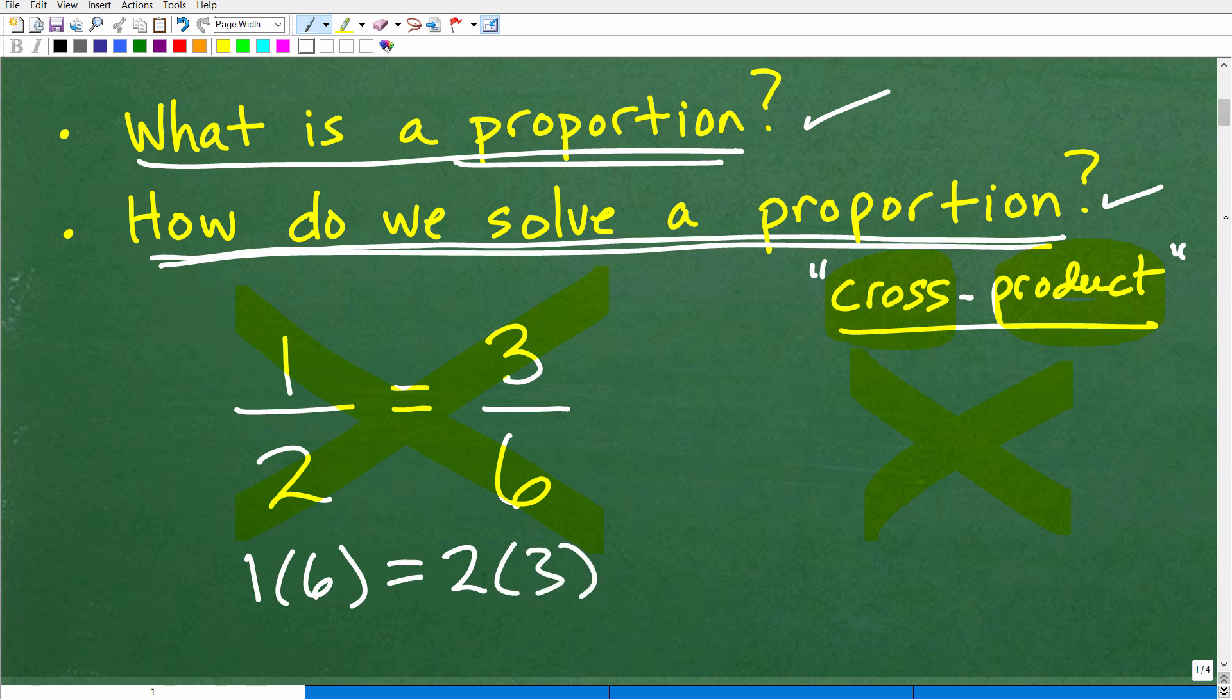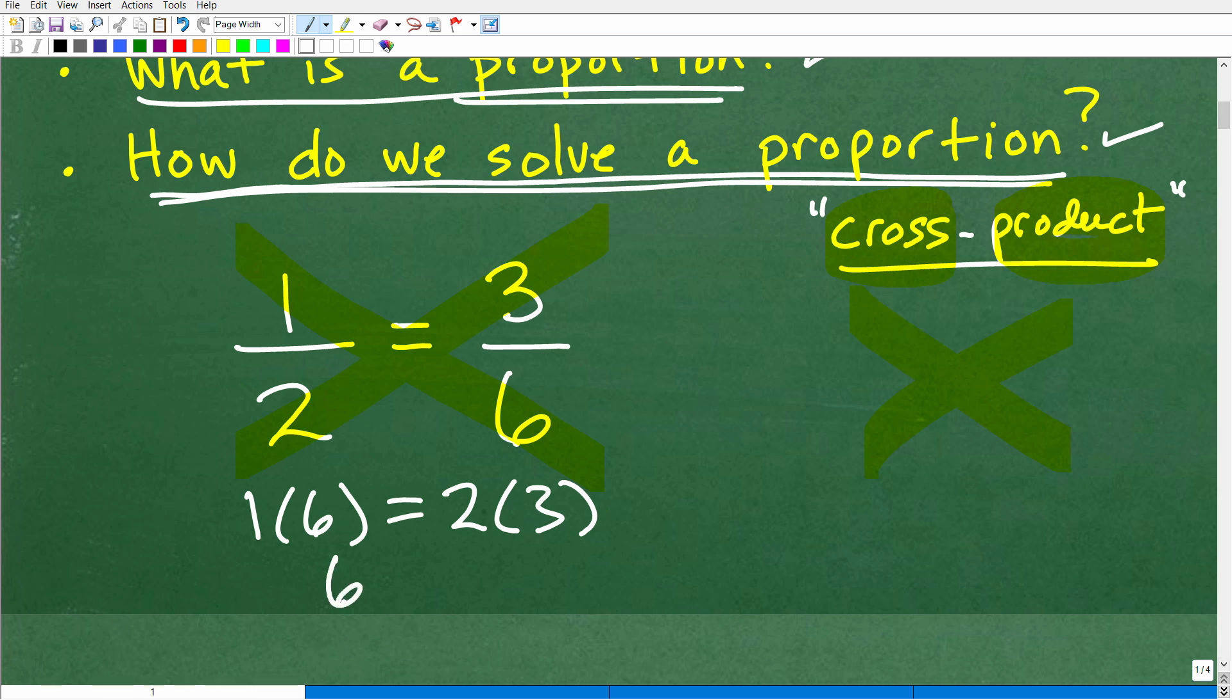And we could see that in fact, this is the case. One times six is six, two times three is six. So they are equal, the cross products are equal. So this is the main idea that you need to know about proportions. One, proportions are two equal fractions and two, the cross products are equal when you have a valid proportion.